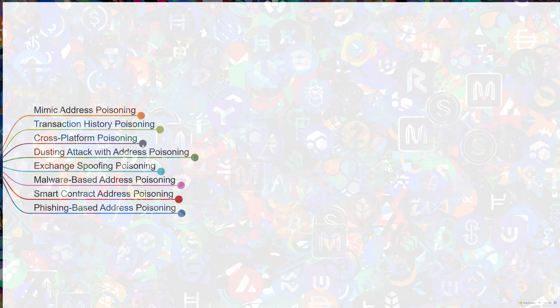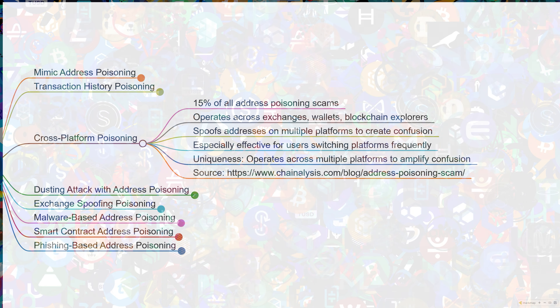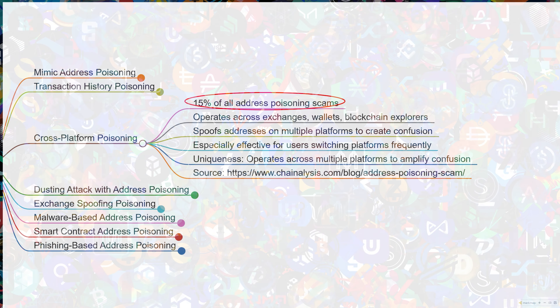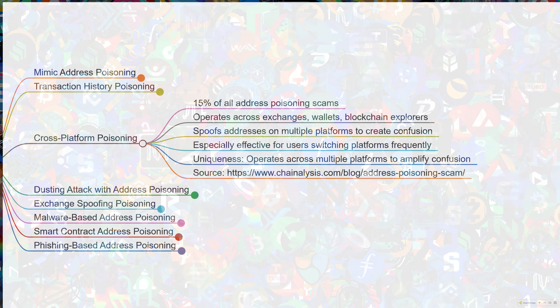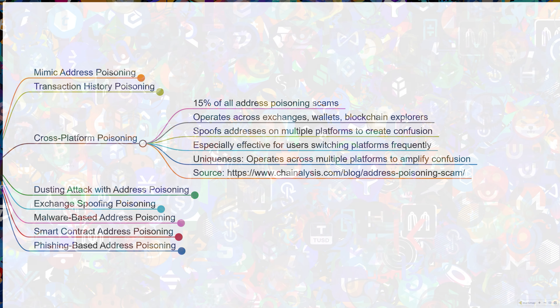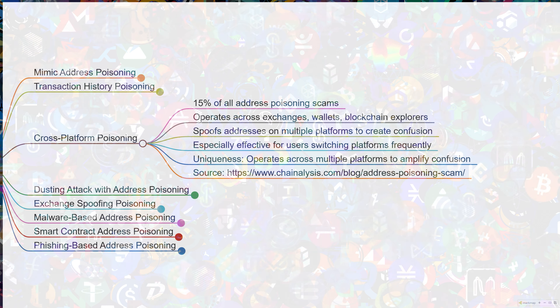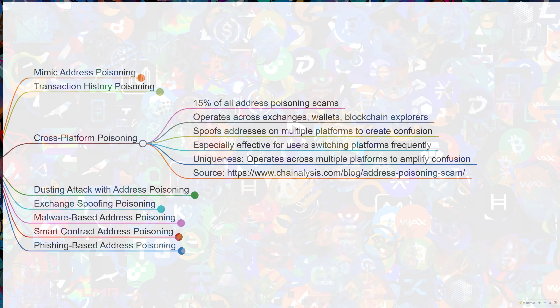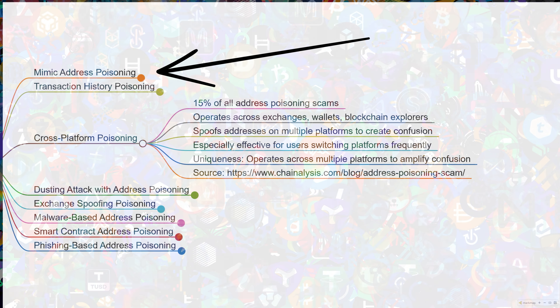Next is cross-platform poisoning. Cross-platform poisoning attacks account for about 15% of all address poisoning scams, as confirmed by blockchain analysis firms. These scams thrive on users interacting with assets across multiple platforms, which amplifies confusion and increases the likelihood of errors. Cross-platform attacks involve spoofing addresses across various platforms like exchanges and blockchain explorers. By mimicking addresses on multiple services, scammers can create confusion, especially when users access their crypto wallets through different interfaces. This variation builds on mimic attacks but spreads confusion across the ecosystem, making it harder to spot discrepancies.